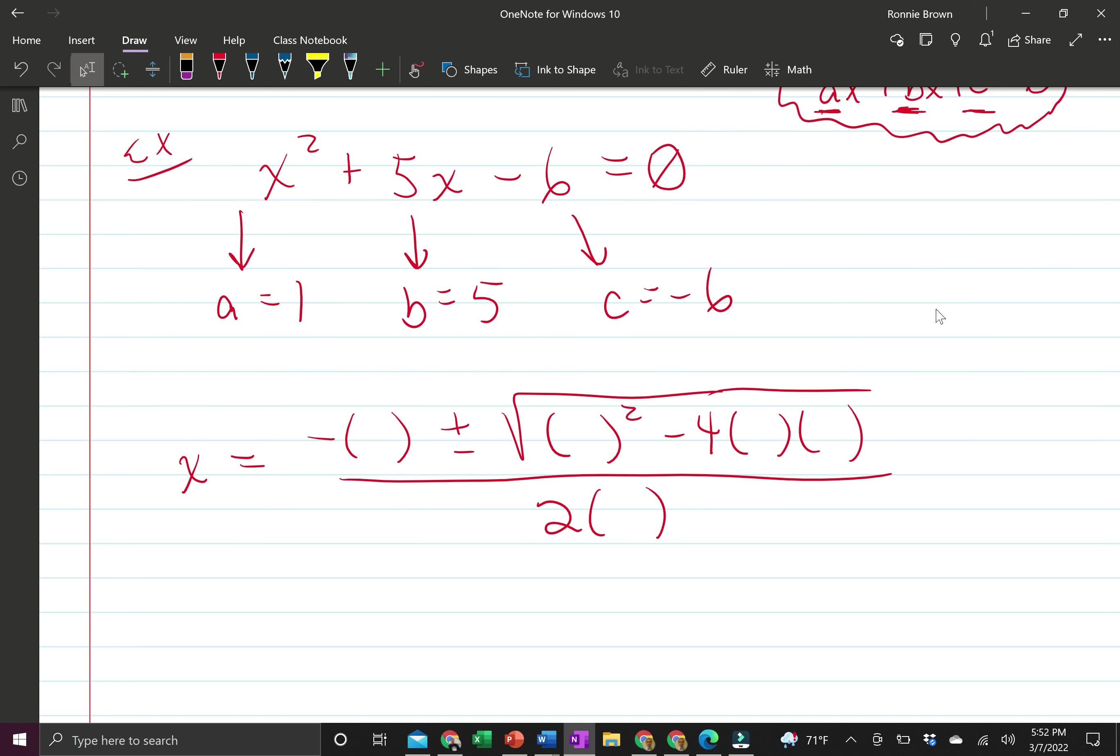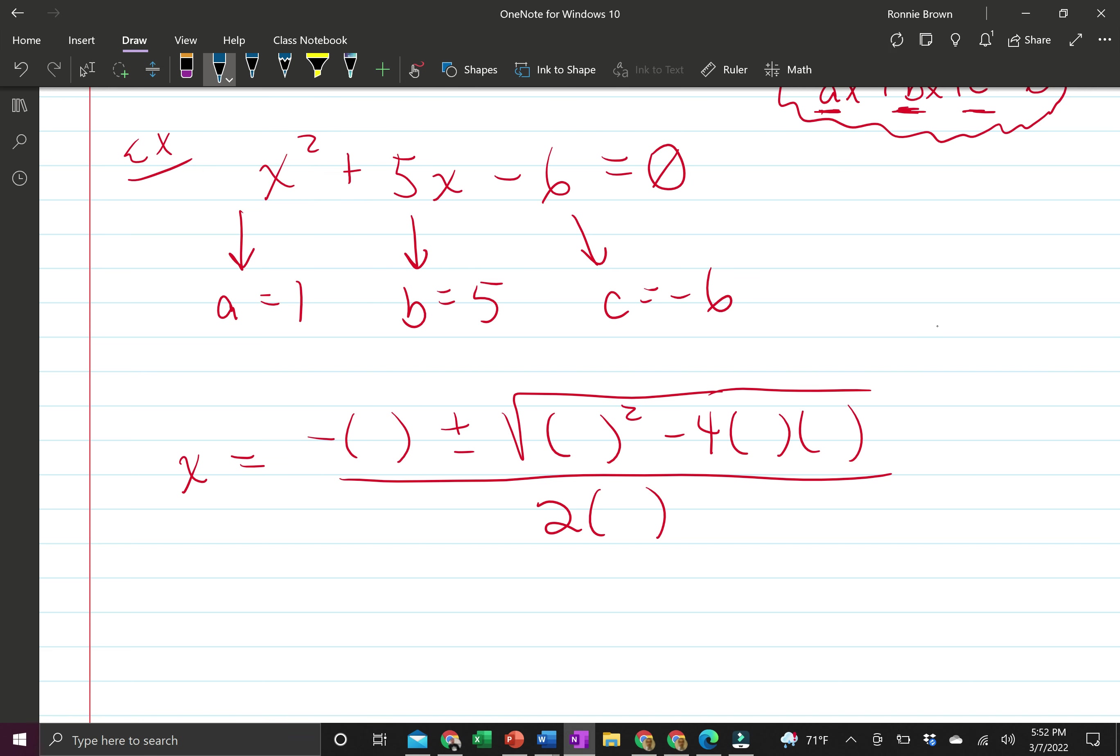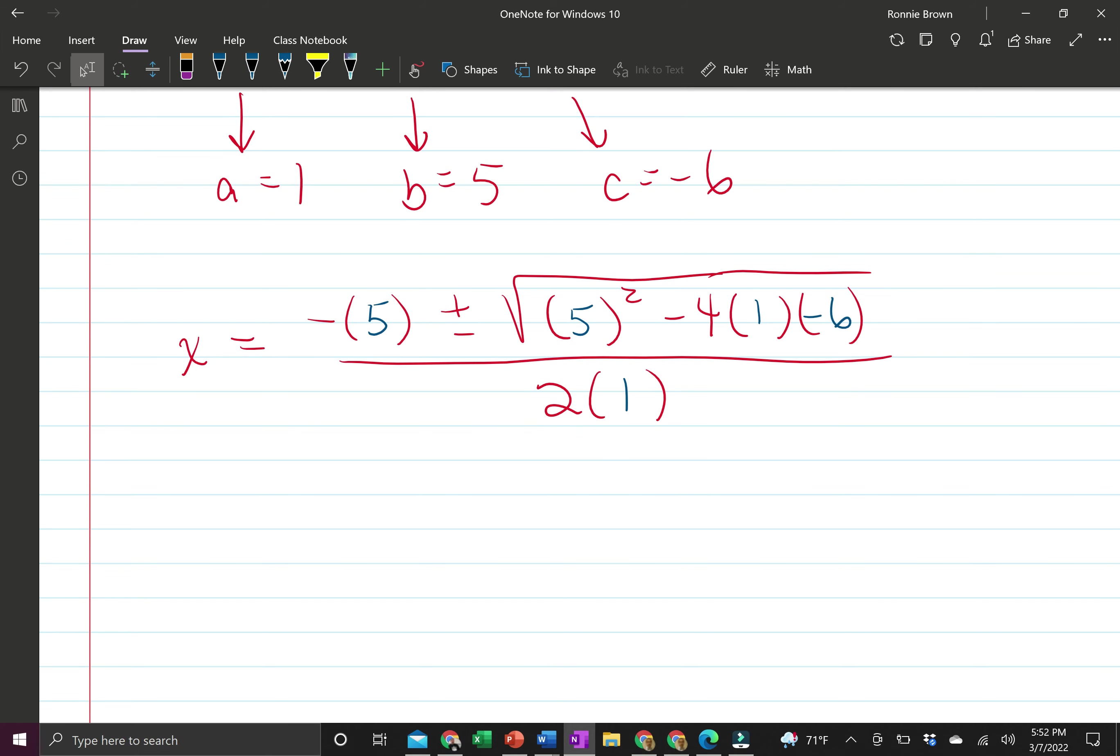Be sure you have the quadratic formula written down right next to you so that you can see exactly what you're substituting into. Here I'm showing parentheses to show that I'm substituting in for specific variables. The formula is negative b plus or minus b squared minus 4ac over 2a. So our b is 5, our a is 1, c is negative 6, and our a is 1. Substituting correctly is so very important.